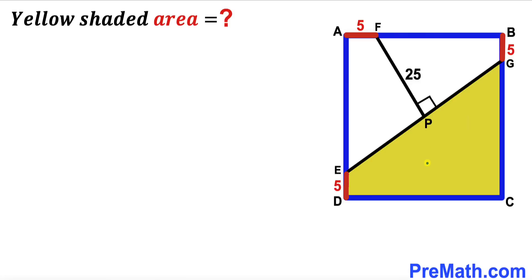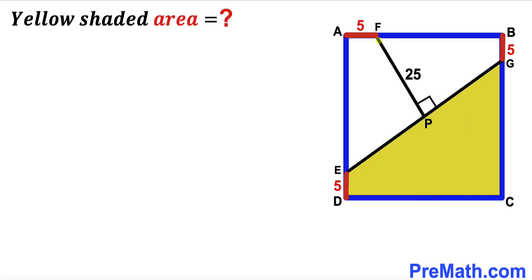Welcome to pre-math. In this video we have got a yellow shaded trapezoid CDEG fully confined in a square ABCD, such that this tiny segment ED is 5 units. Likewise, segment AF is 5 units and segment BG is 5 units as well. Moreover, segment FP is perpendicular to line EG at point P, and the length FP is 25 units. Our task is to calculate the area of this yellow shaded region.